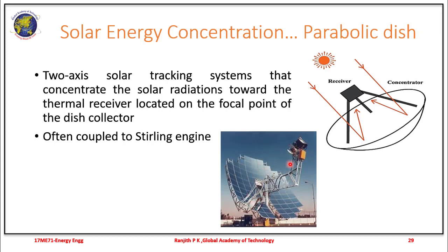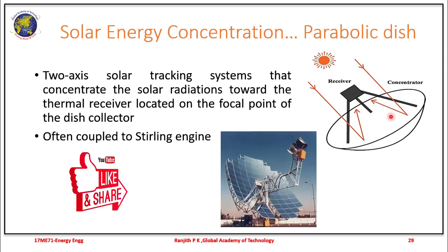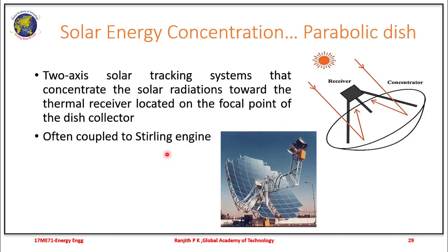A parabolic dish consists of a two-axis mechanism that concentrates solar radiation towards a thermal receiver located at the focal point of the dish collector. The incident solar energy from the dish is concentrated and received onto the receiver, and this is often coupled to a Stirling engine which is made to work on the parabolic dish.